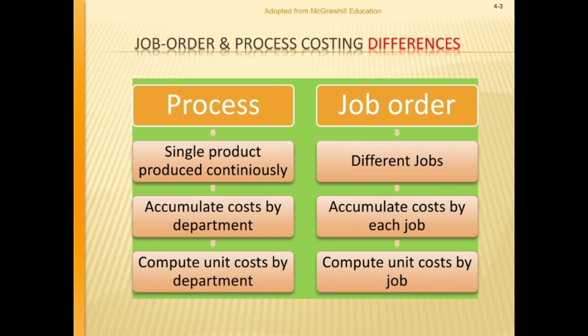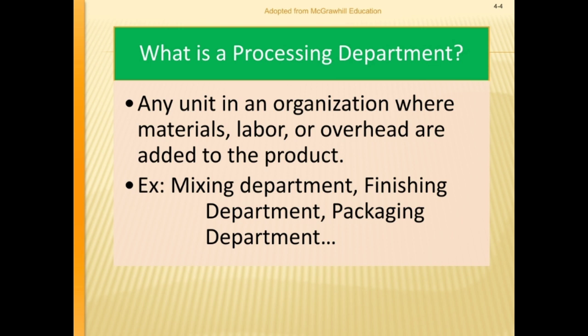First difference: process costing is only used for a single product produced continuously, whereas job order costing is used for different jobs or unique products. Next, process costing accumulates costs by department, whereas job order accumulates costs by each job. As a result, process costing computes unit cost by department, while job order computes unit cost by job.